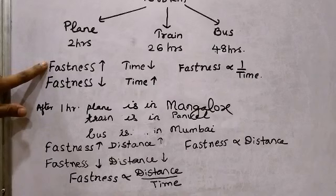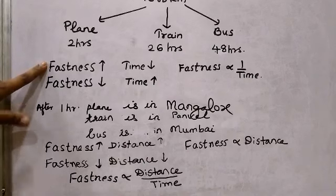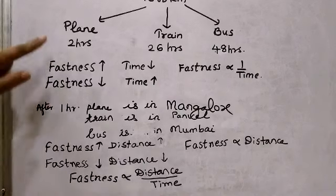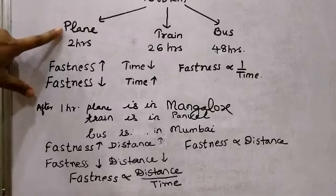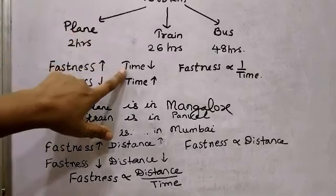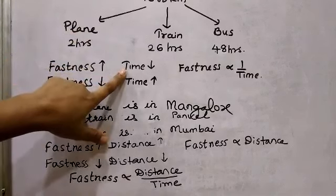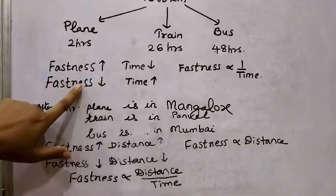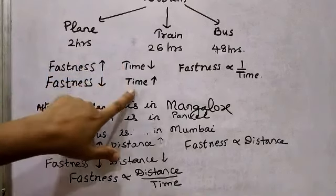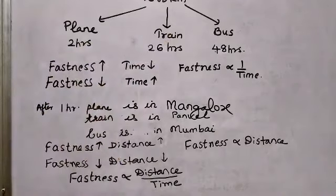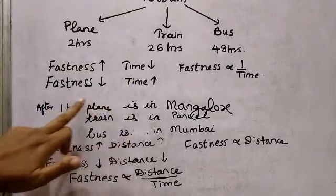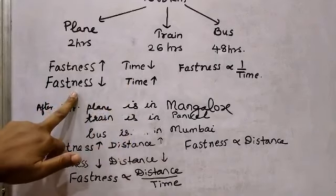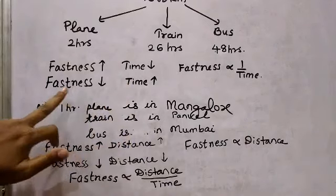If the fastness of the means of travel is more, the time taken is less. For example, the plane travels very fast so the time taken by the plane is less — fastness is more, time is less. But if the fastness is less, the time becomes more. For example, the bus takes 48 hours because the fastness is less.